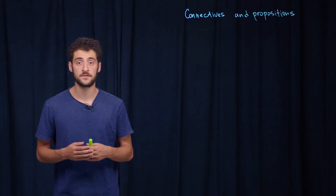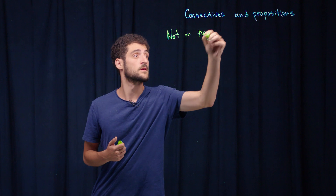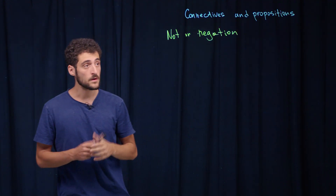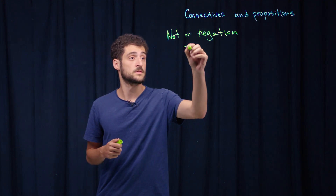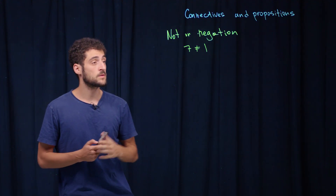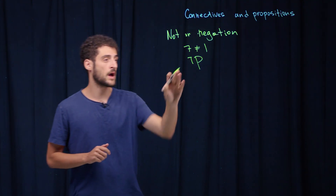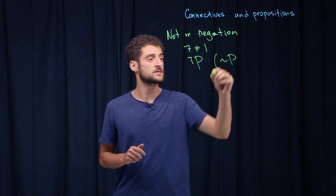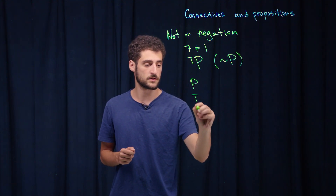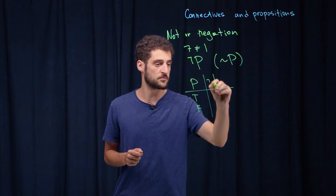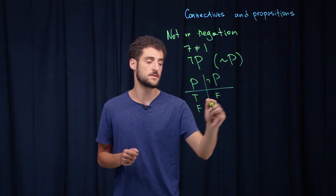The last example of a connective is NOT, also known as negation. An example is '7 is NOT equal to 1.' This is obviously true because 7 is actually not equal to 1, and we denote it as NOT p, sometimes written with a negation symbol. If p is true, then the negation of p is false, and if p is false, then the negation is true.